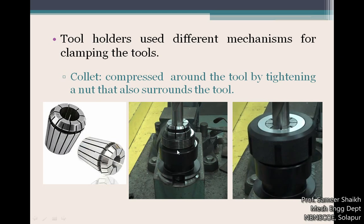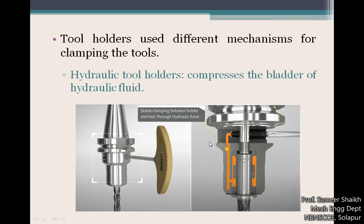The second type is the collet arrangement. The shank of the cutting tool is placed inside the collet, the collet nut is inserted from the top and tightened. This compresses the collet, putting pressure on the shank so the entire assembly acts as a single unit.